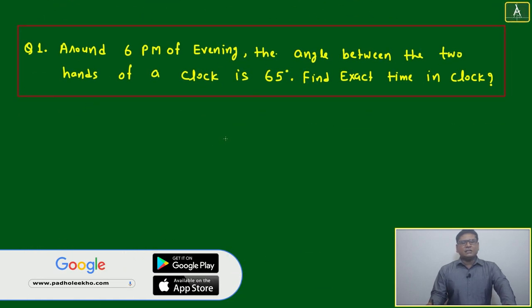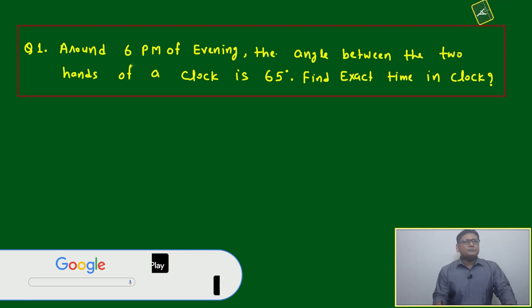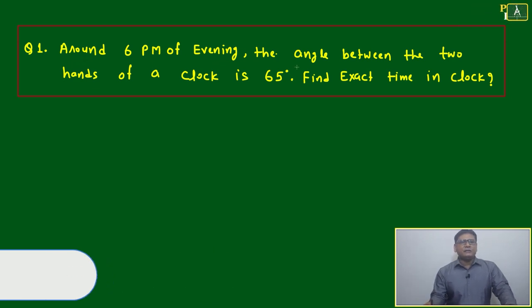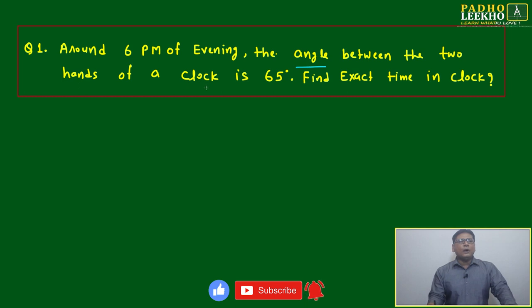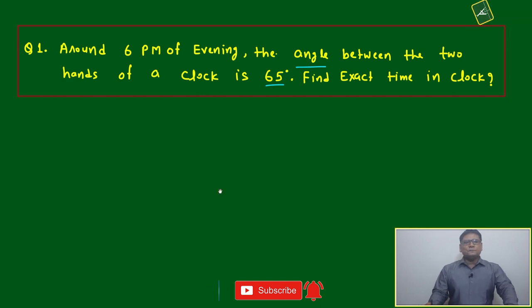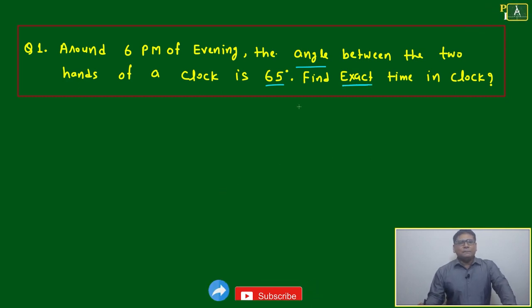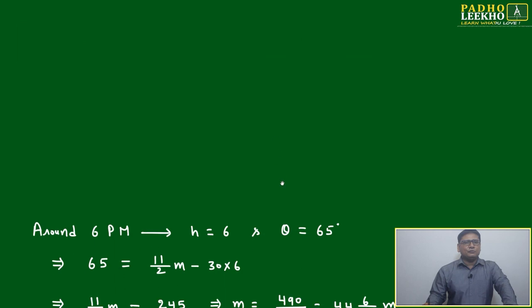First question: Around 6 PM evening, the angle between the two hands of a clock is 65 degrees. Find the exact time. This is an angle-based question. What's the meaning of exact time? Given 65 degrees, we need to find how far the minute hand has gone beyond the hour hand. Based on that, we can find the exact time around 6 PM.